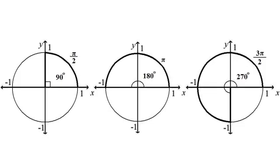In radians, these three angles measure pi over 2, pi, and 3 pi over 2.